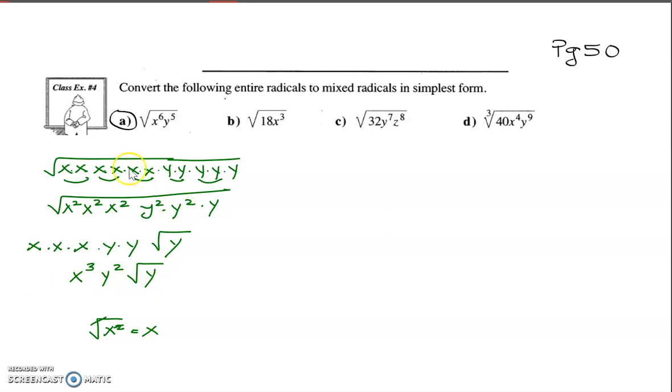A shorter way to think this question is to think about, when you have something like this, how many pairs of two can I make out of my x? I have six x's. How many pairs of two can I make? I can make three pairs of x squareds. And then how many pairs of y squareds can I make out of them? I can only make two y squareds. So then I'm left with just one y inside.